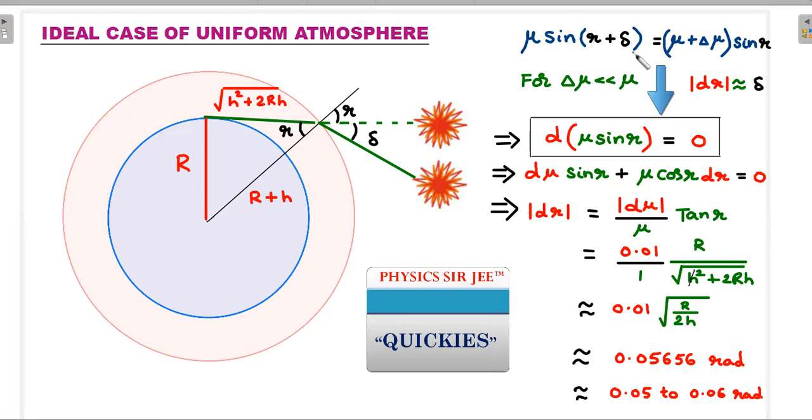This appreciable value of Snell's law can be written as change in μ sine R: d(μ sin R) = 0. This is the differential form of Snell's law I wrote at one particular position. If you expand this using product rule, you get dμ sin R + μ cos R dR = 0. Our dR is the angle of deviation, obviously modulus because it's decreasing here, so I want a positive number.